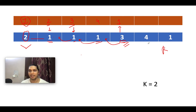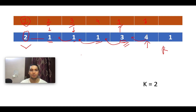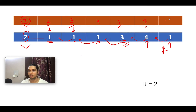The next element is 4; compared to 3, it is increasing, so the constraint is not met and the count resets to 1. The final element is 1; compared to 4, it is decreasing — constraint met — so we extract the previous count (1) and add 1, giving 2. We have now built the non-increasing consecutive count array across all elements.